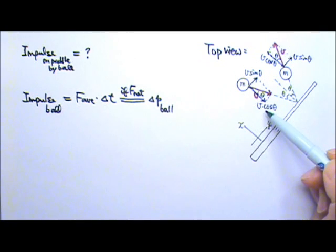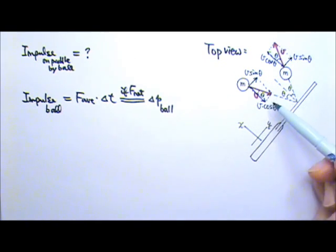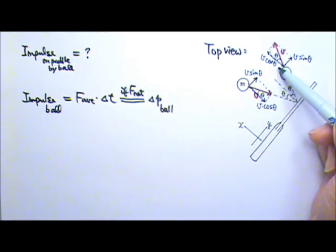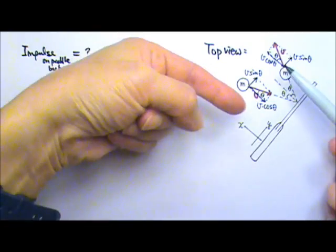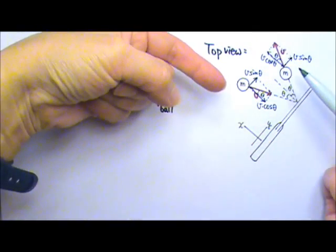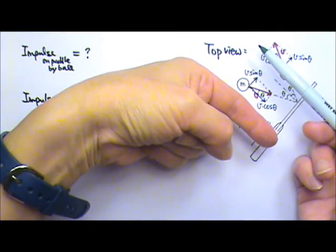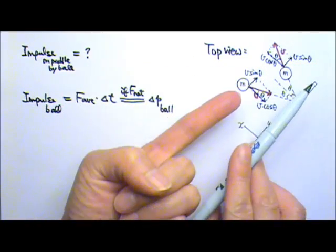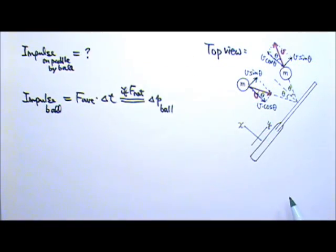In the x direction, the initial velocity is v cosine theta. The final velocity is also v cosine theta, but the opposite direction. So the velocity in the x direction has changed, although the velocity in the y direction did not change.